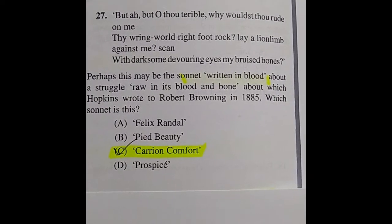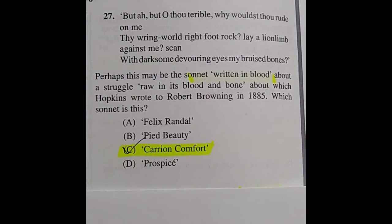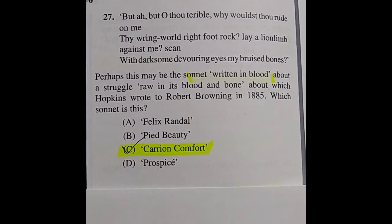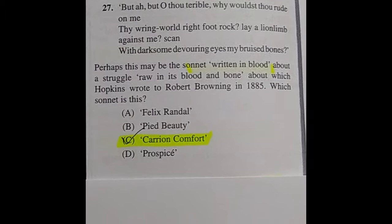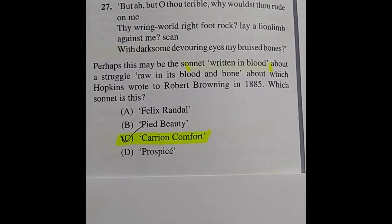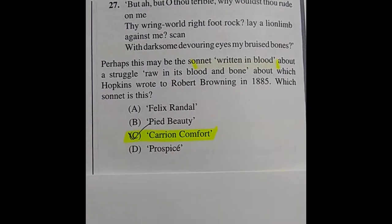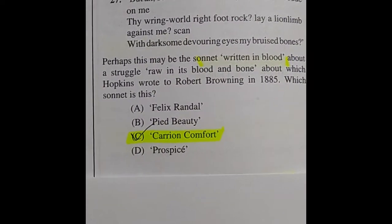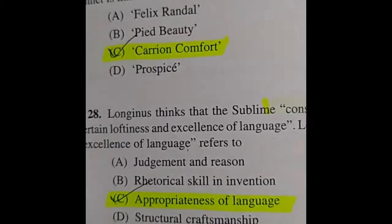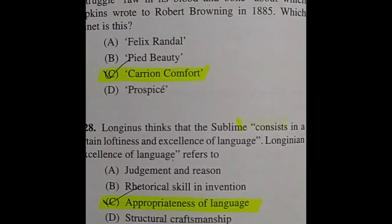Question 27: 'But ah, but O thou terrible, why wouldst thou rude on me thy wring-world right foot rock lay a lion limb against me? Scan with darksome devouring eyes my bruised bones.' This sonnet, written in blood about a raw struggle in blood and bone, which Hopkins wrote to Robert Bridges in 1885 — which sonnet is this? The answer is: Carrion Comfort.